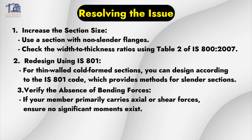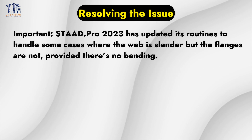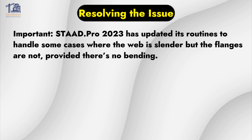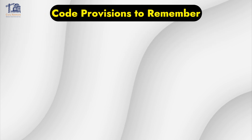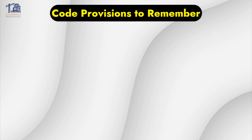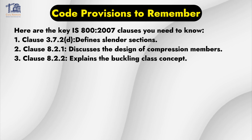Third, verify the absence of bending forces — if your member primarily carries axial or shear forces, ensure no significant moments exist. Also note that STAAD Pro 2023 has updated this routine to handle some cases where the web is slender but the flanges are not, provided there is no bending. To resolve all this, always remember the following key clauses.